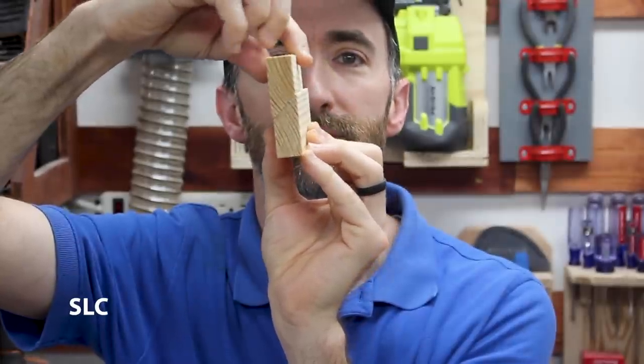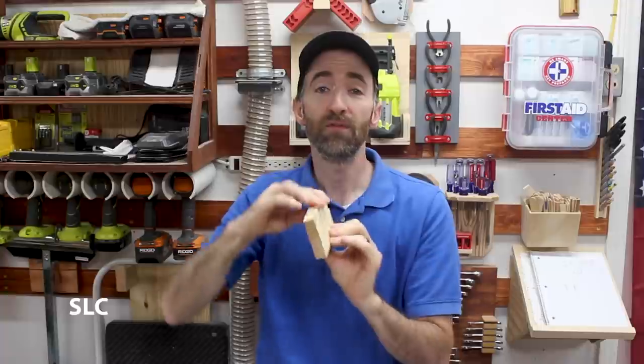French cleats are naturally, as they come together, they wedge itself together. Now, if you've constructed them correctly, they should, in minor earthquakes, should be pretty secure up on your wall. Now the tools themselves, if you haven't secured them real well to your actual holder, there's a chance for those to fall off.